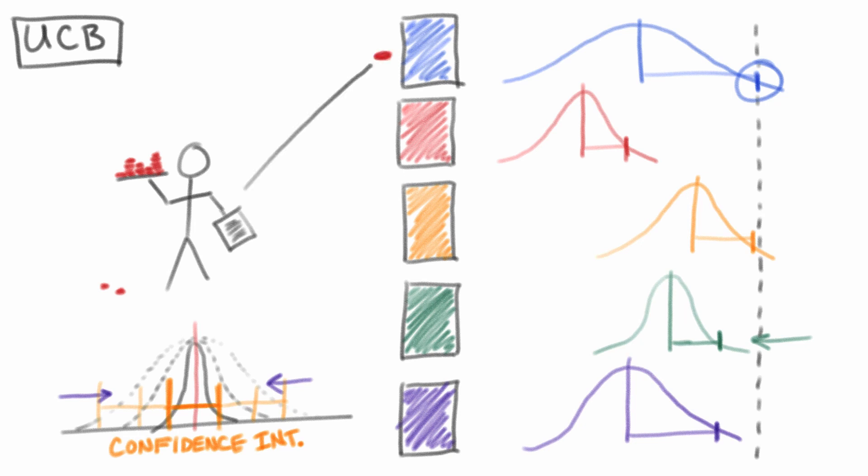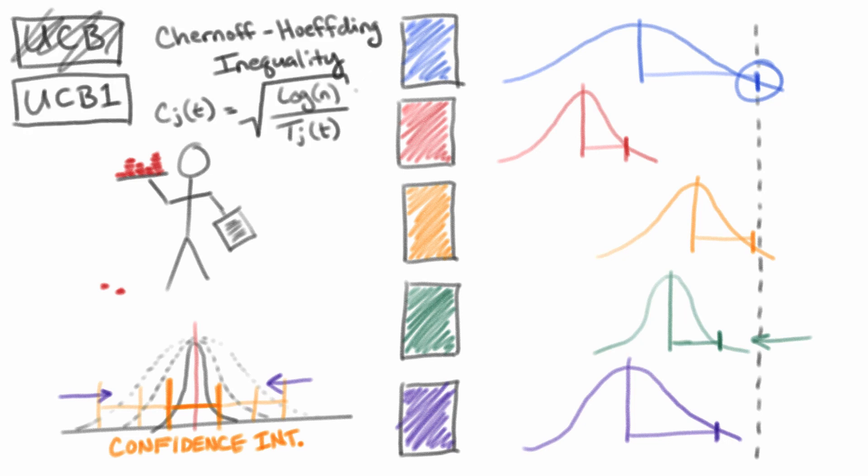It's worth noting that the most popular form of UCB is the UCB1 algorithm, which uses an important insight known as the Chernoff-Hoeffding inequality to achieve much faster confidence bounds calculations for arbitrary distributions.